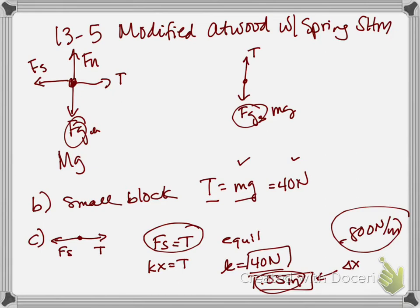On to part D. Now, the string is cut at point P. The string is cut. So, what's going to happen here? The big mass is going to stay attached to the spring and the little mass is going to fall. They actually break this up for us quite nicely. Part D is calculate the time taken by the four kilogram block to hit the floor. So, I have advised you many times to be able to calculate quickly how long does it take something that's dropped from rest from a certain height to hit the ground.